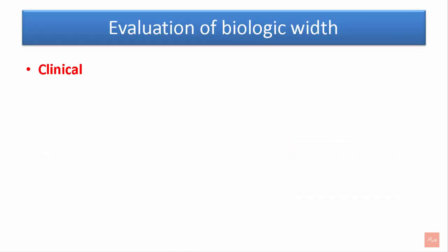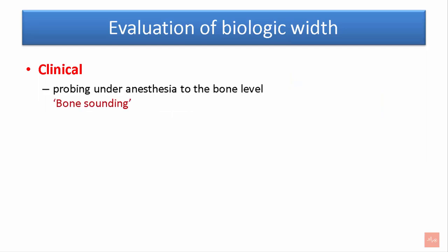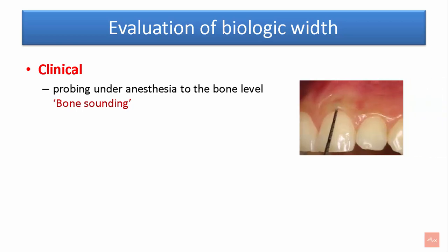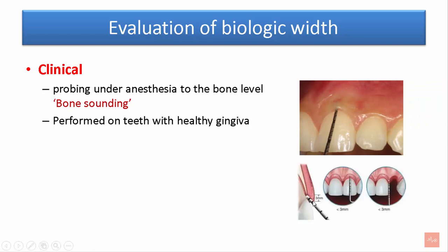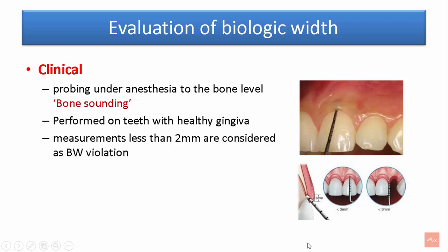There are two methods of evaluating biological width: clinical and radiographic. The clinical method involves probing under anesthesia to the bone level, also called bone sounding. It is performed on teeth with healthy gingiva. The measurement is taken from the crest of the alveolar bone to the marginal gingiva, and the sulcus depth is subtracted from the total length. When measurements are less than 2 mm, it is considered that the biological width has been violated.